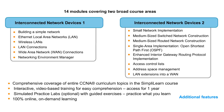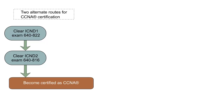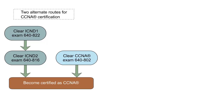There are two ways you can become a CCNA. The first path involves clearing exam 640-822 for ICND1, followed by exam 640-816 for ICND2. This route is usually taken by people who are new to networking and would like to take a slower pace of preparation.